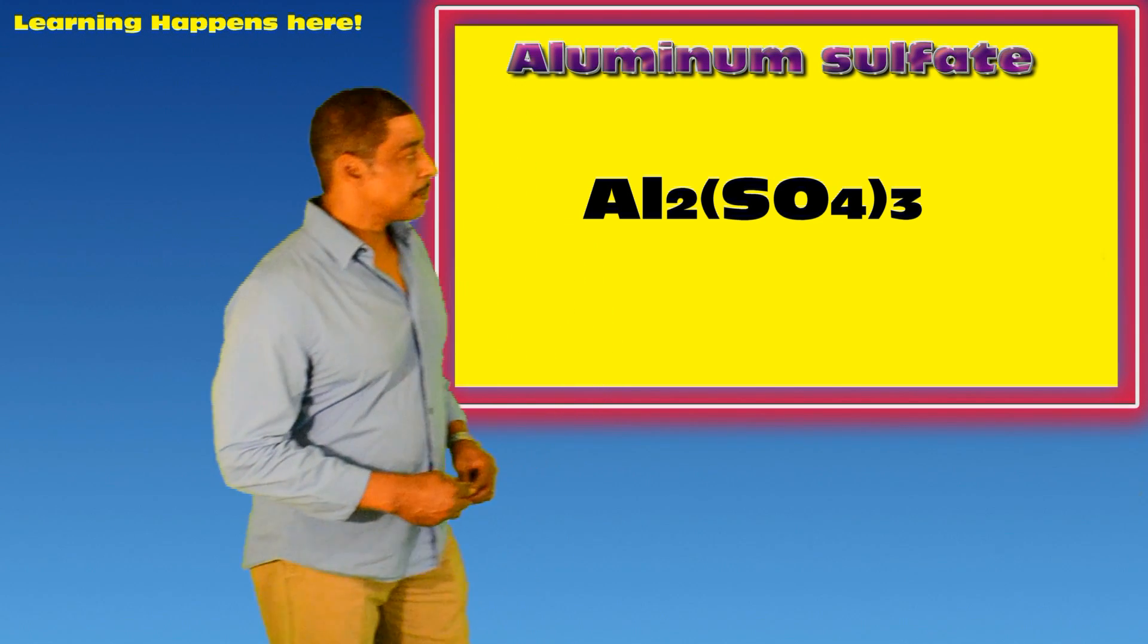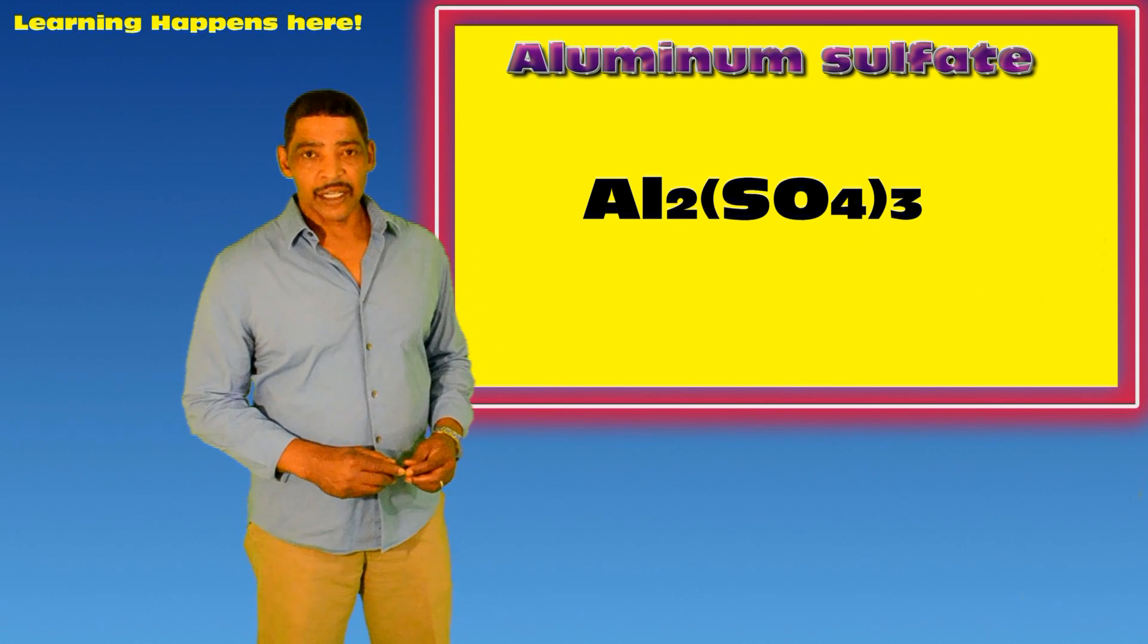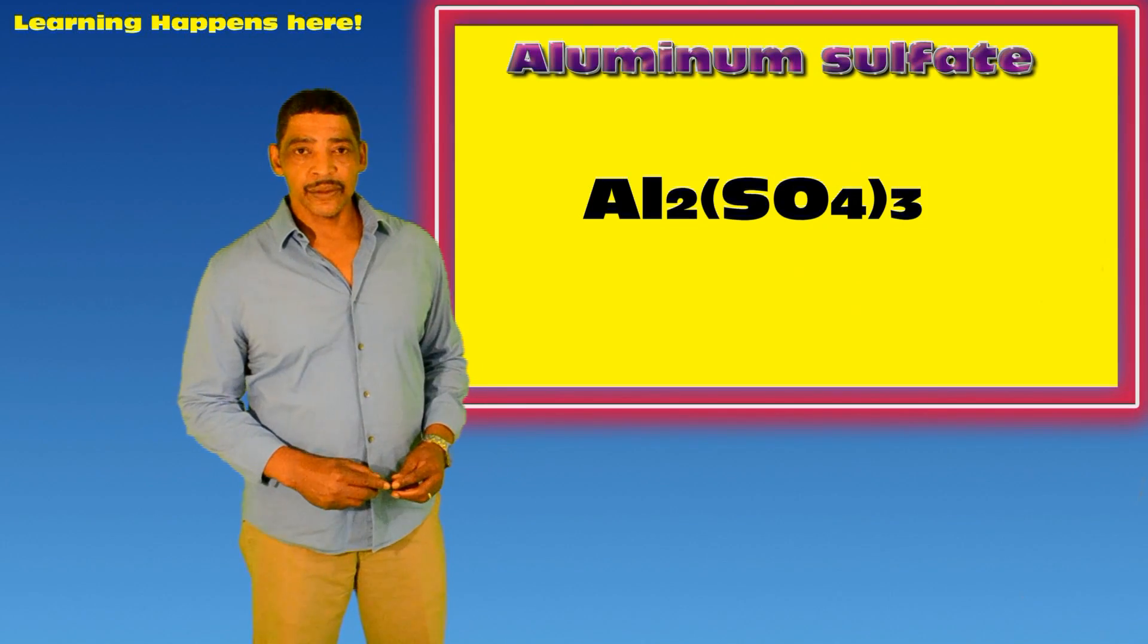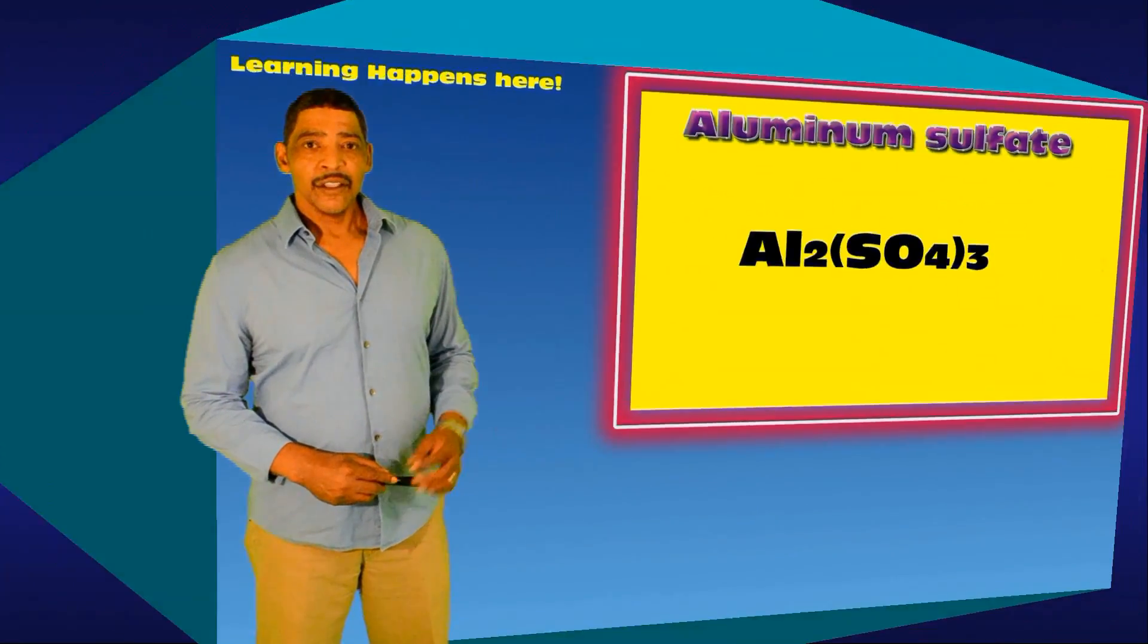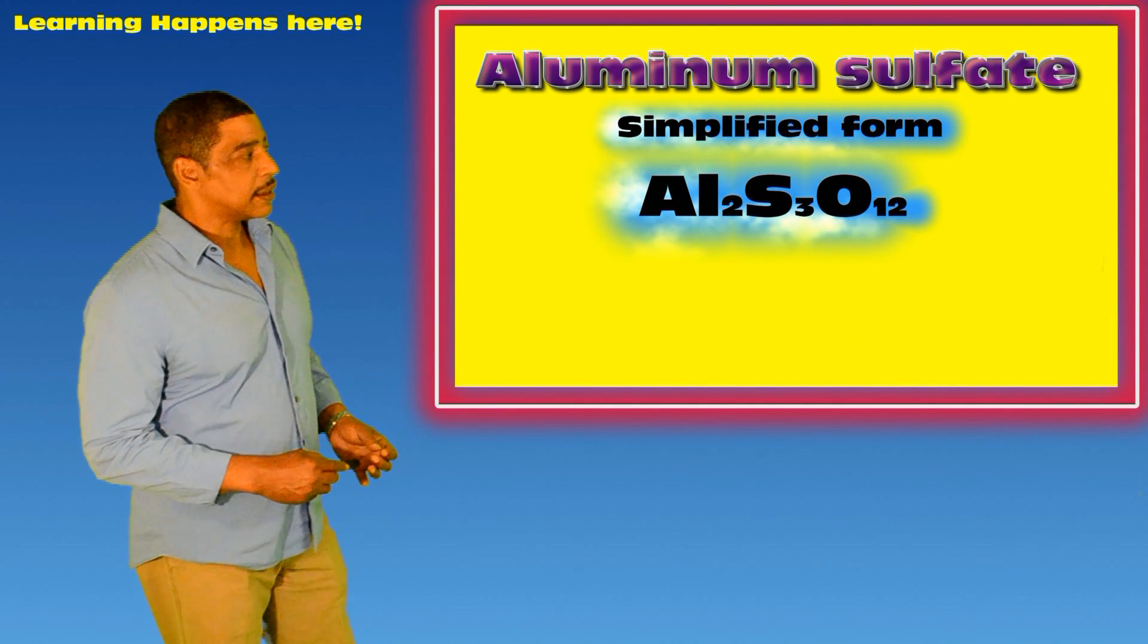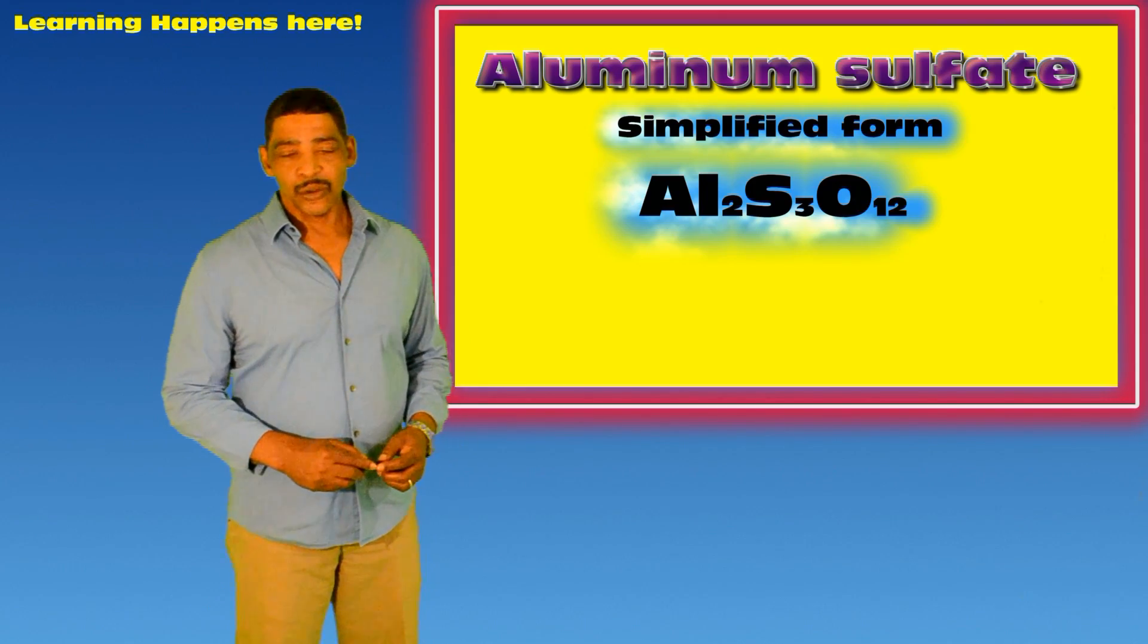In the chemical formula, there is a subscript 3 written outside of the parenthesis. To clear the parenthesis, we simply distribute. This will simplify the formula as follows, where now we write Al2S3O12.